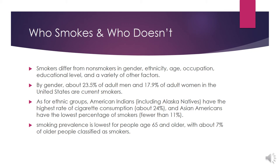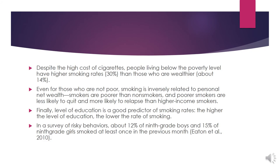Smokers differ from non-smokers in gender, ethnicity, age, occupation, education level, and a variety of other factors. Men tend to smoke more in comparison to females. Among ethnic groups, American Indians have the highest rate of cigarette consumption. Smoking prevalence is lowest for people aged 65 and older. Level of education is a good predictor of smoking — the higher the level of education, the lower the rate of smoking.